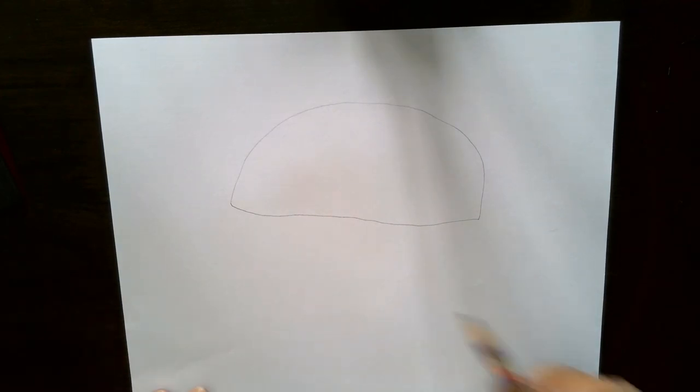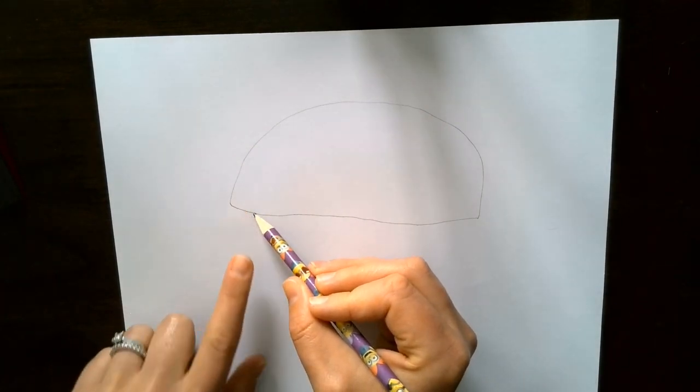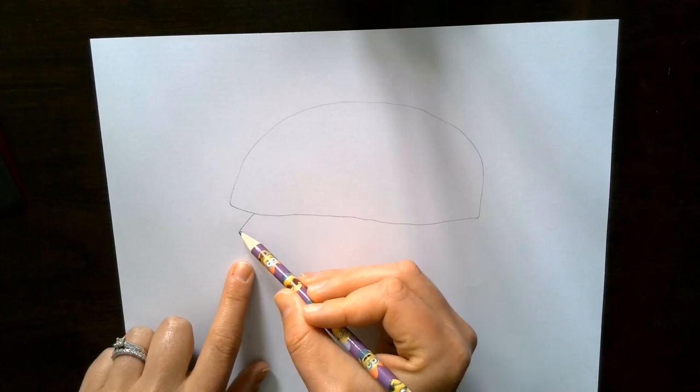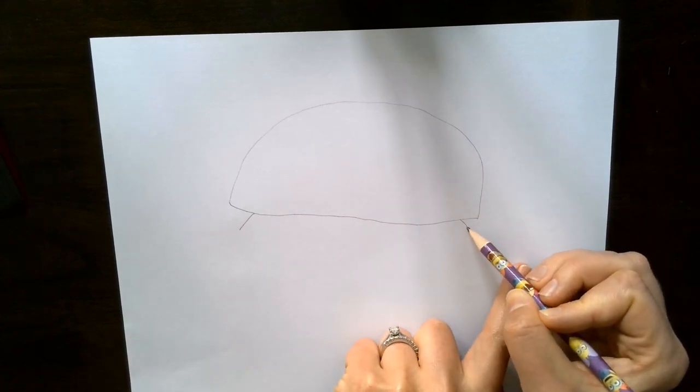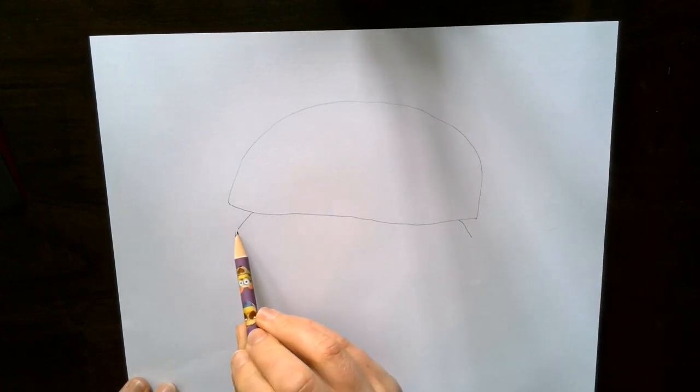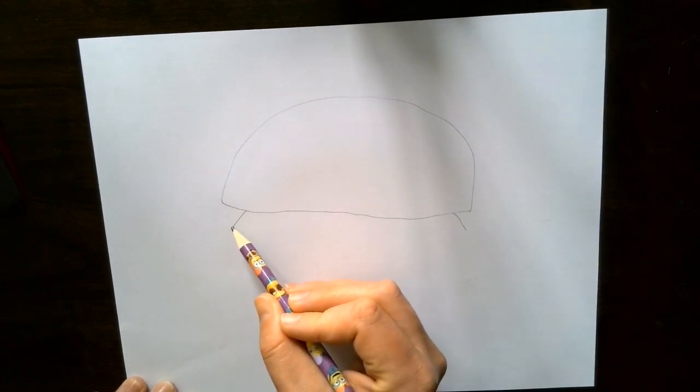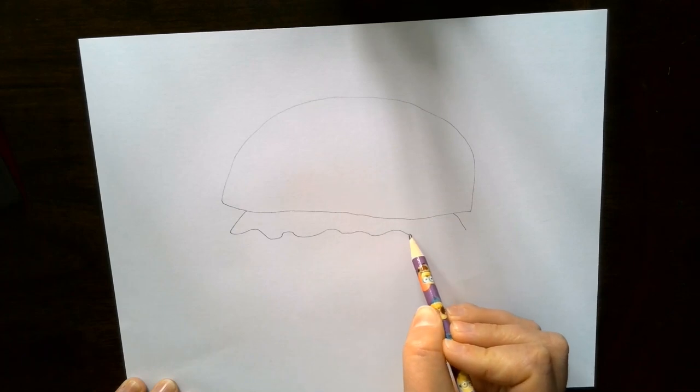Next underneath here, we're going to do one line just about a finger space in from the side, one line that kind of points out towards the edge, and the same thing at this side. Alright, then we're going to connect these two short lines with a wavy line. You can decide how wavy you would like yours to be.